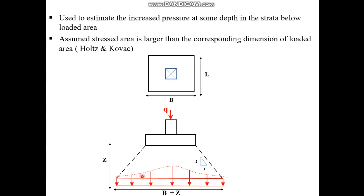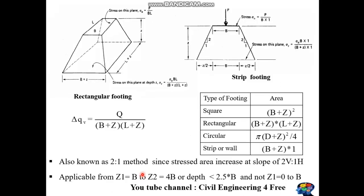For strip footing, the stress at the surface is given by stress equals force over area. The force is the concentrated load P divided by the area. For strip footing, the area is the width B multiplied by unit length.